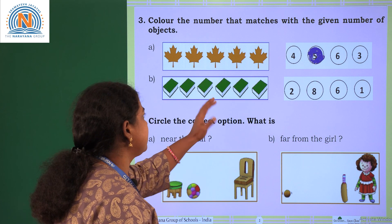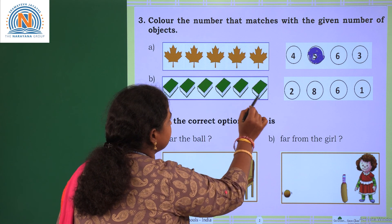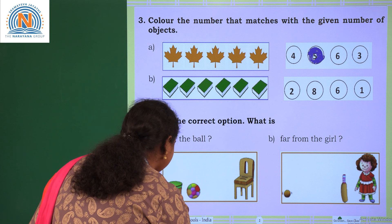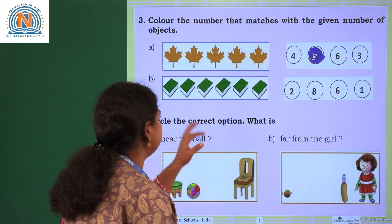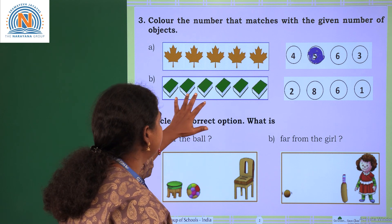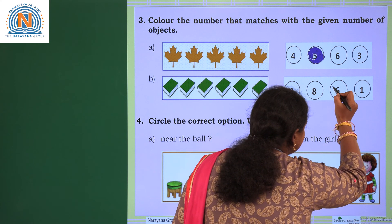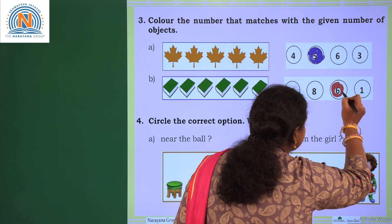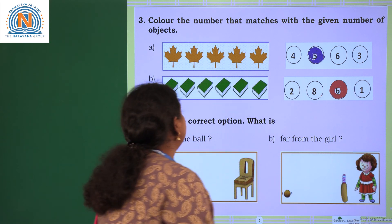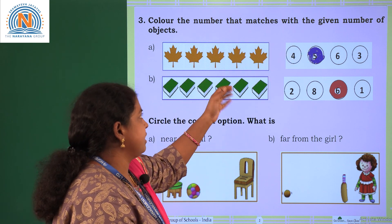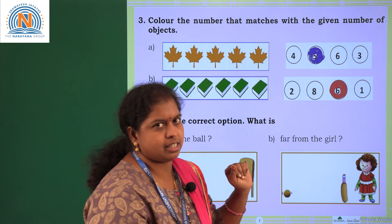What is the next picture? There are books. How many books are there? Let's count: 1, 2, 3, 4, 5, 6. There are 6 books. Now we need to color the number 6. Color the number that matches with the given number of objects. There are 5 leaves so we colored the number 5. There are 6 books, so we have colored the number 6.